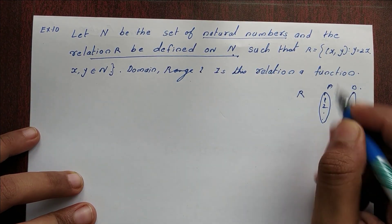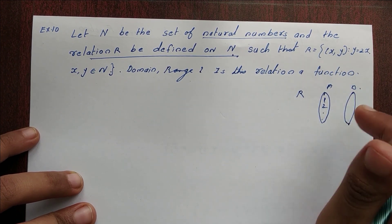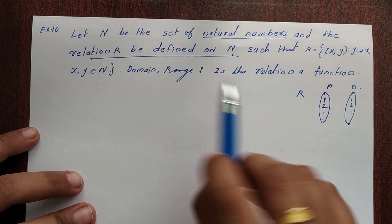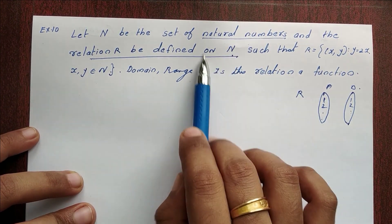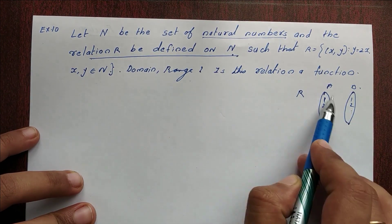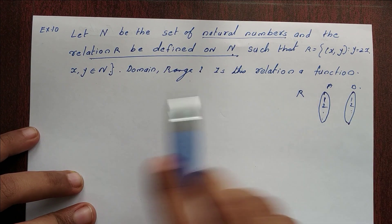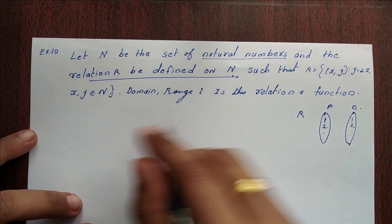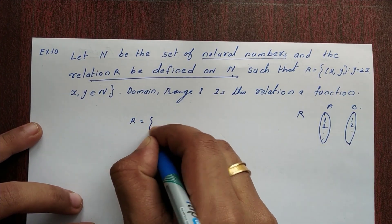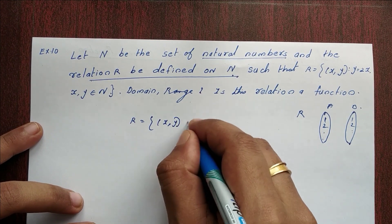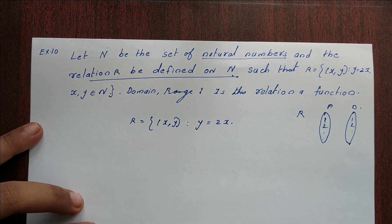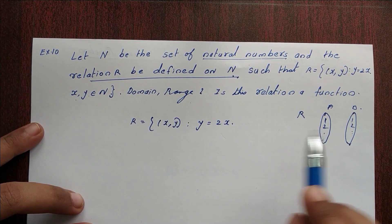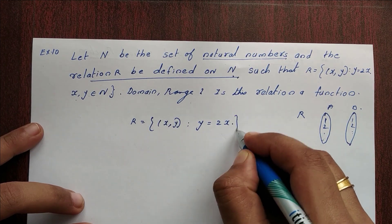The natural numbers are 1, 2, 3, etc. The relation R is defined as the set of ordered pairs (x, y) such that y = 2x, where x and y belong to N. So x and y are natural numbers, and y equals 2x.